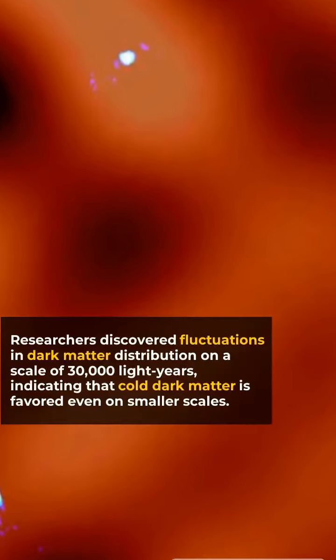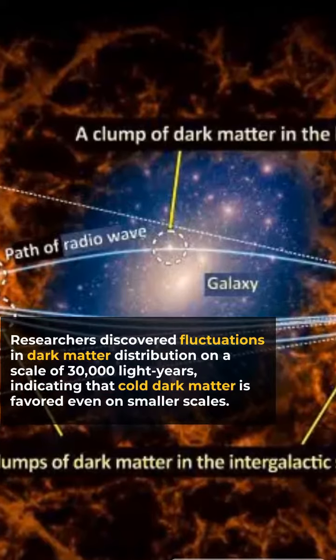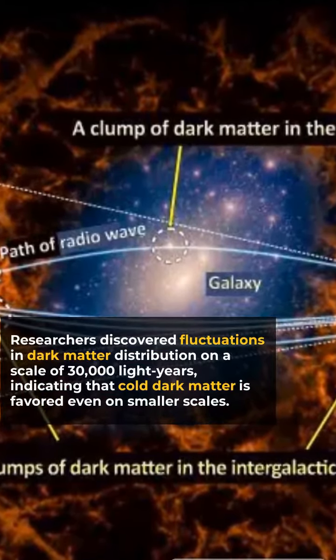Researchers discovered fluctuations in dark matter distribution on a scale of 30,000 light years, indicating that cold dark matter is favored even on smaller scales.